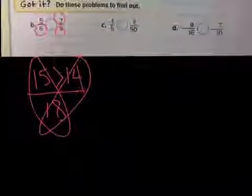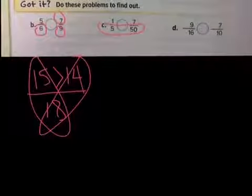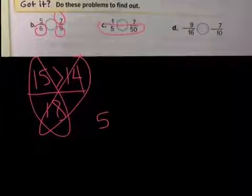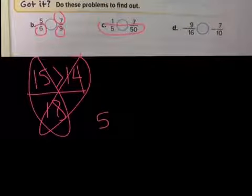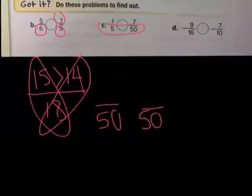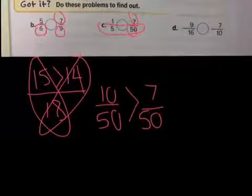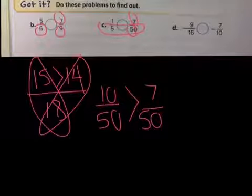Over here we're going to have a common multiple of 50. What did I do to the five? I multiplied it by 10, so I do the same to the one. The 15 stays unchanged, so I do nothing to the seven. Ten-fiftieths is greater than seven-fiftieths.